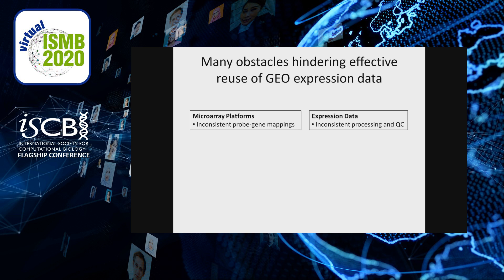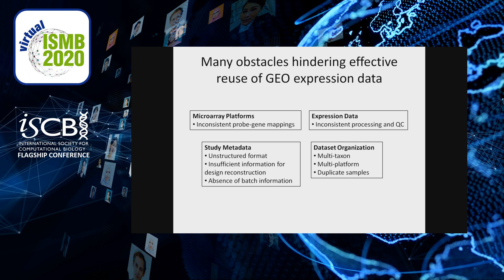For expression data, while GEO does store raw expression data, the most accessible are the processed ones provided by data submitters. There is no guarantee that every dataset is processed in a consistent manner, and the level of quality control also differs from dataset to dataset. In terms of metadata, the information is stored as unstructured free text, and for some datasets, the submitted information is insufficient to reconstruct the original design.